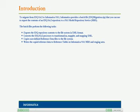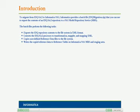To migrate from IDQ 8.6.2 to Informatica 9.0.1, Informatica provides a batch file, idqmigration.zip, that you can use to export the contents of an IDQ 8.6.2 repository to a 9.0.1 model repository service (MRS). The batch files perform the following tasks: export the IDQ repository contents to the file system in XML format; convert the IDQ 8.6.2 processes to transformation, mapping, and mapping XML; copy user-defined reference data files to the file system; and write the copied reference data to reference tables in Informatica 9.0.1 MRS and staging area.